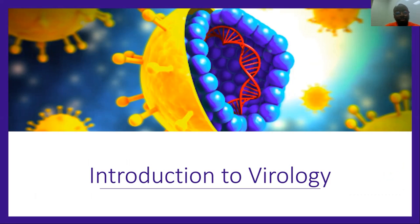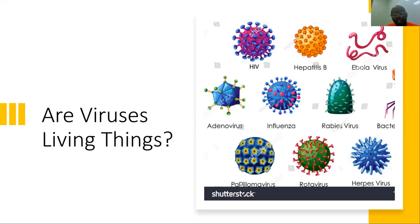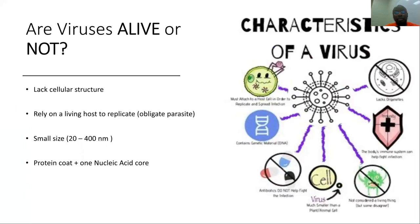Are viruses living things? For an organism to be considered living, it must have a cellular structure. Viruses do not — they lack membrane-bound organelles or even naked organelles, and they rely on living hosts to replicate rather than replicating independently. They are small in size, ranging about 20 to 400 nanometers, and contain just a protein coat and one nucleic acid — either DNA or RNA.